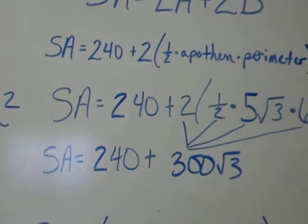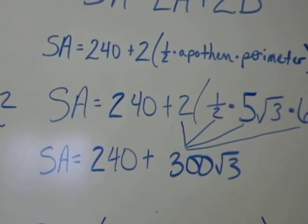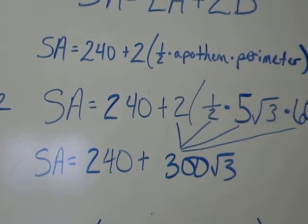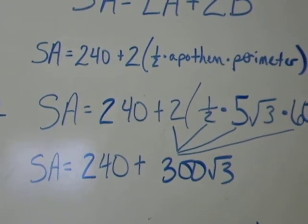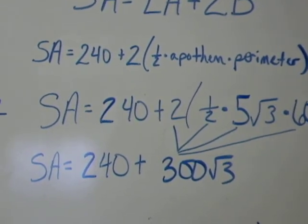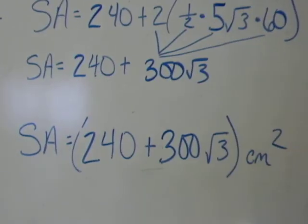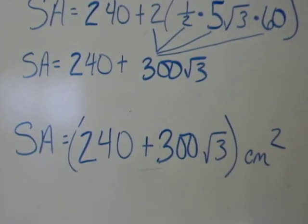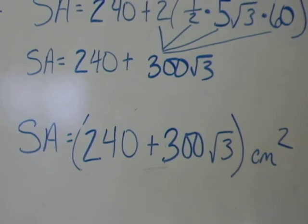Are 240 and 300 radical 3 like terms? In other words, can I actually add those two things together? Oh no, I can't. So I need to just put them inside of parentheses and give them the label of centimeters squared because surface area is still area.